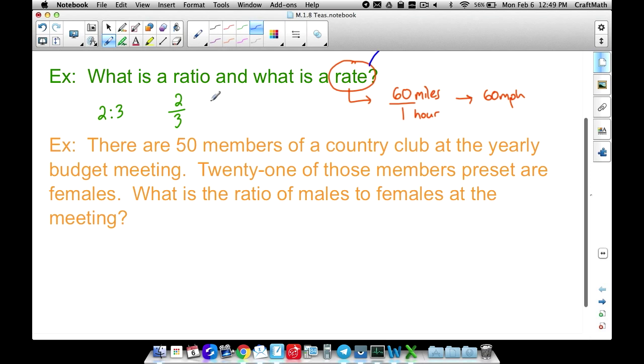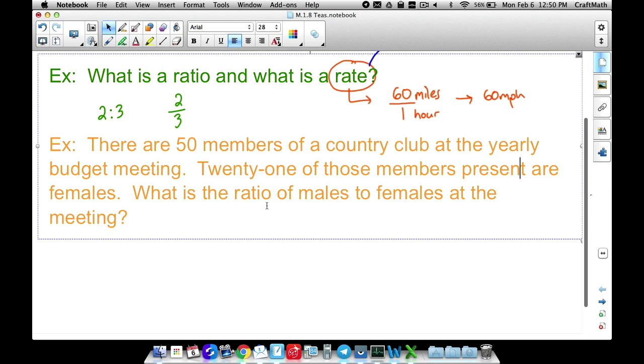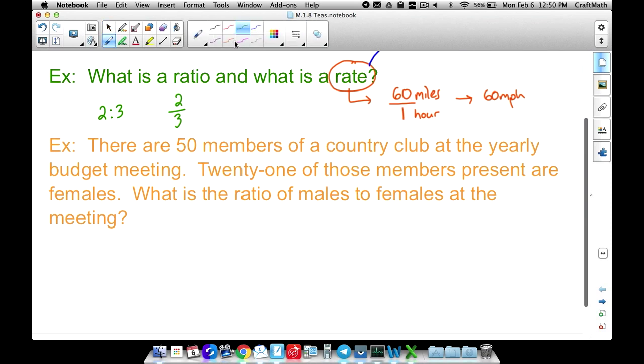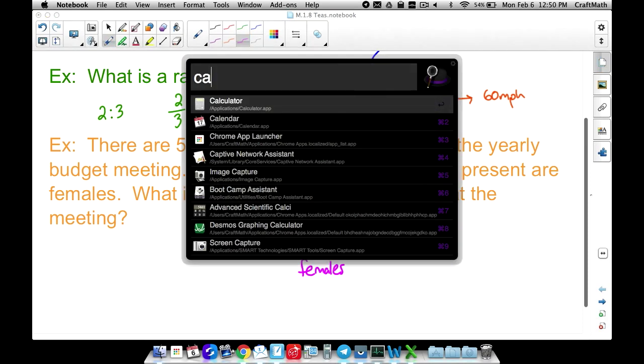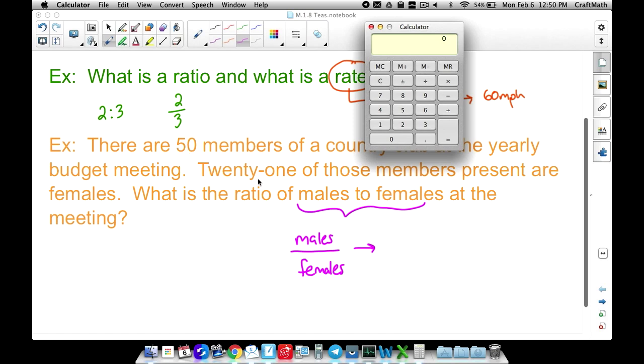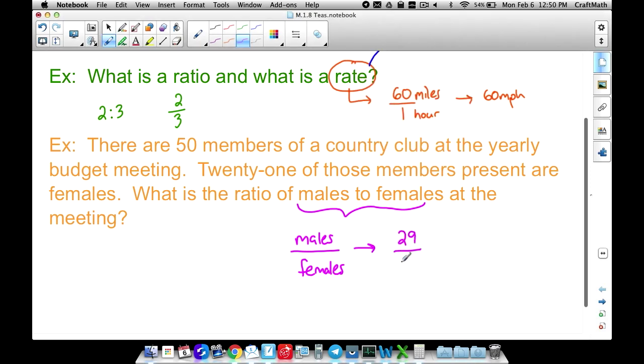Now let's look at an example that involves a ratio. There are 50 members of a country club at the yearly budget meeting. 21 of those members present are females. What is the ratio of males to females at the meeting? So we want a ratio of males to females. This is where you're going to have to be careful. Males to females. You have to be careful with how this is worded. If it was females to males, we'd want to reverse this. But since it says males to females, we're going to set up this ratio like that. Well, how many males do we have? Since there are 50 members, let me get the calculator up. Since there's 50 members at the meeting and 21 of them are females, if we just take 50 minus 21, that's going to give us 29. So 29 males to the number of females where we know there's 21 females. So that ratio is 29 to 21.